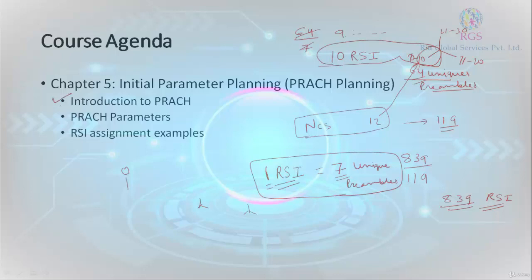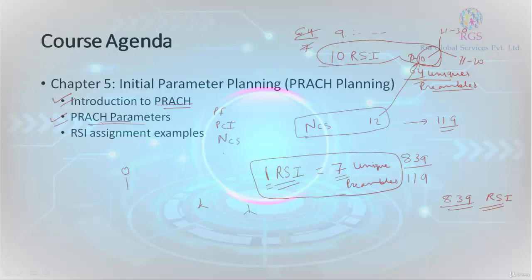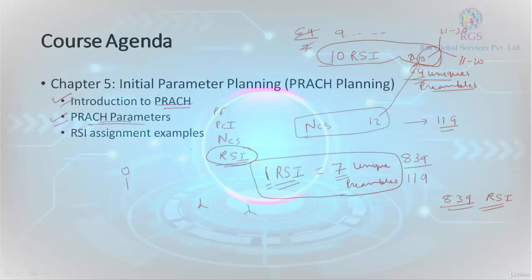So we understood what PRACH is and what random access is. We understood the different PRACH parameters: preamble format, PRACH configuration index, cyclic shift, and the root sequence index. This is what we basically plan — out of 839, how many root sequence indexes are required per cell, and we repeat the pattern so that root sequence indexes create no collision between different cells.